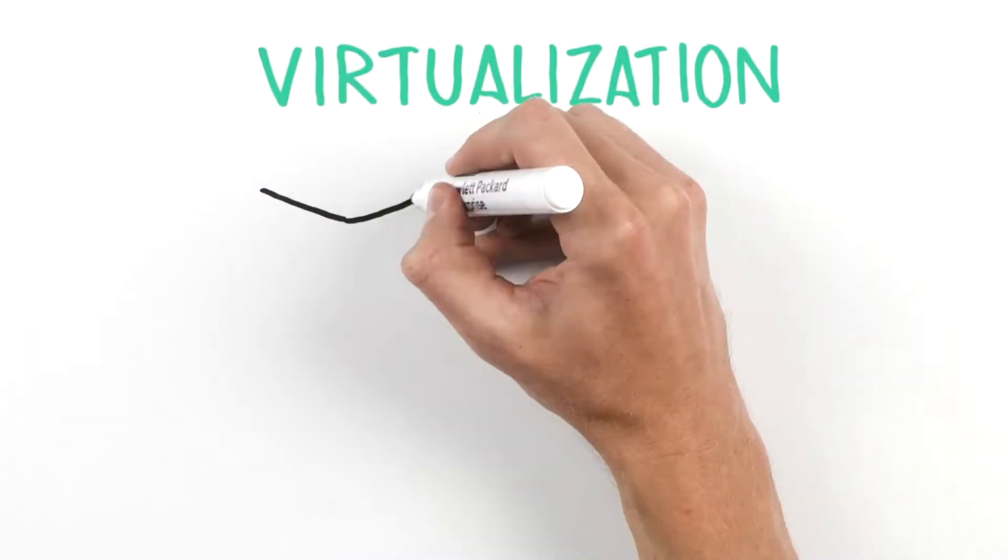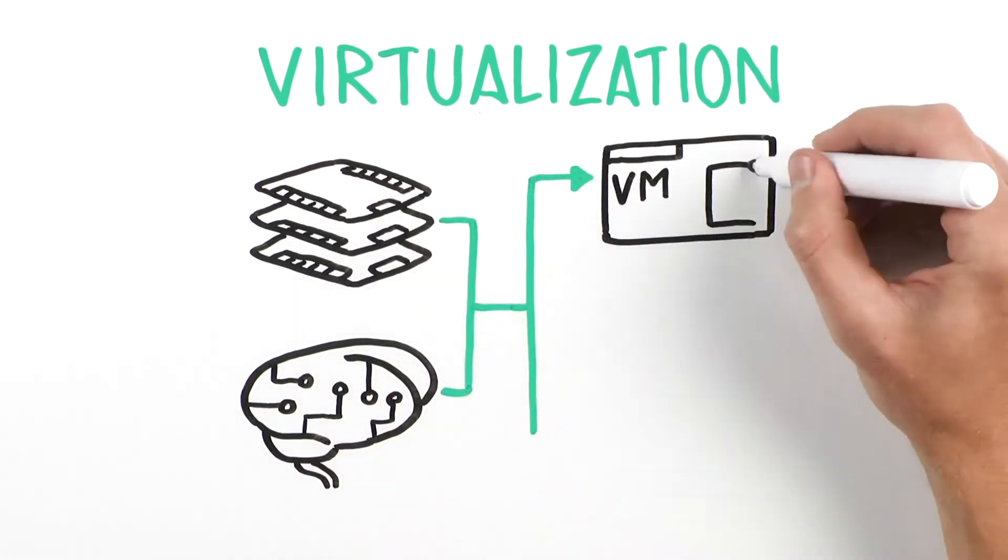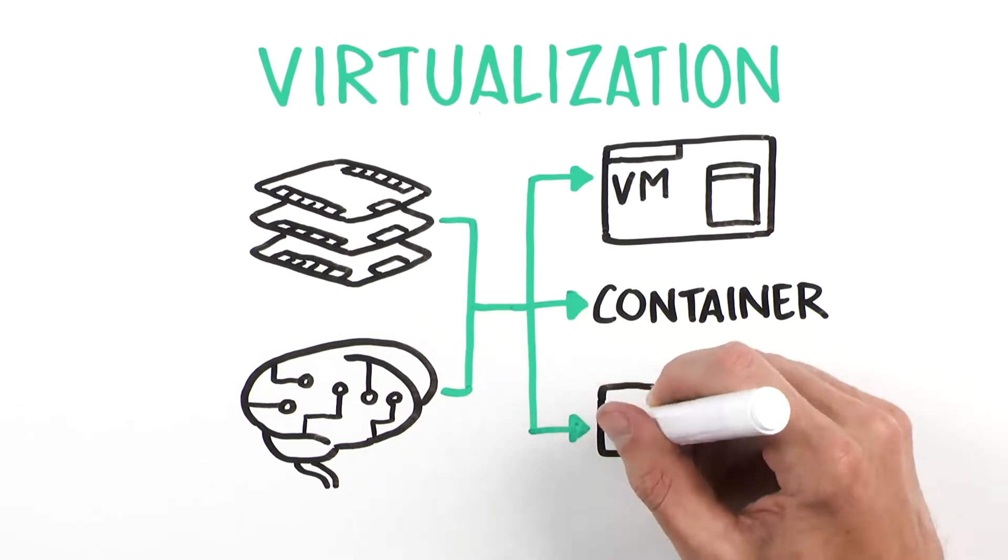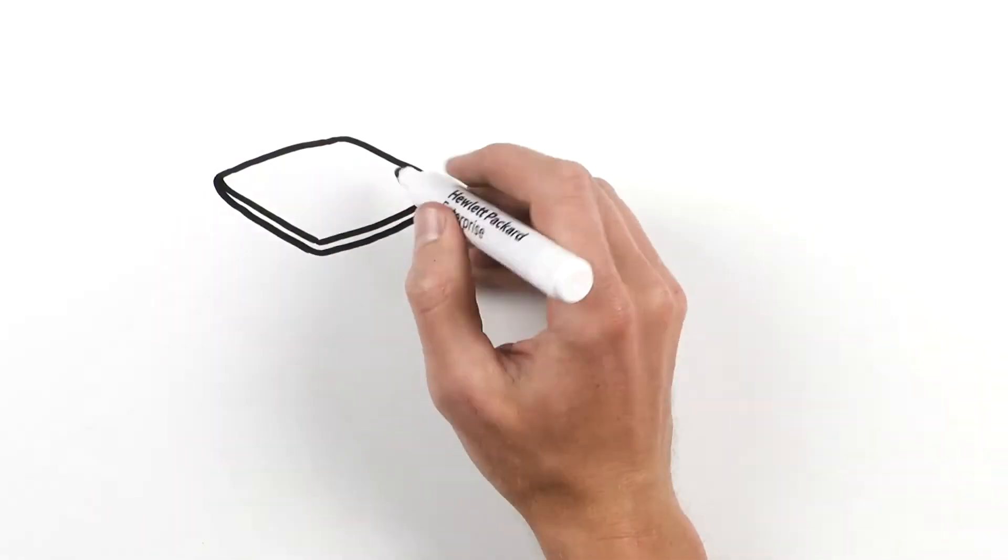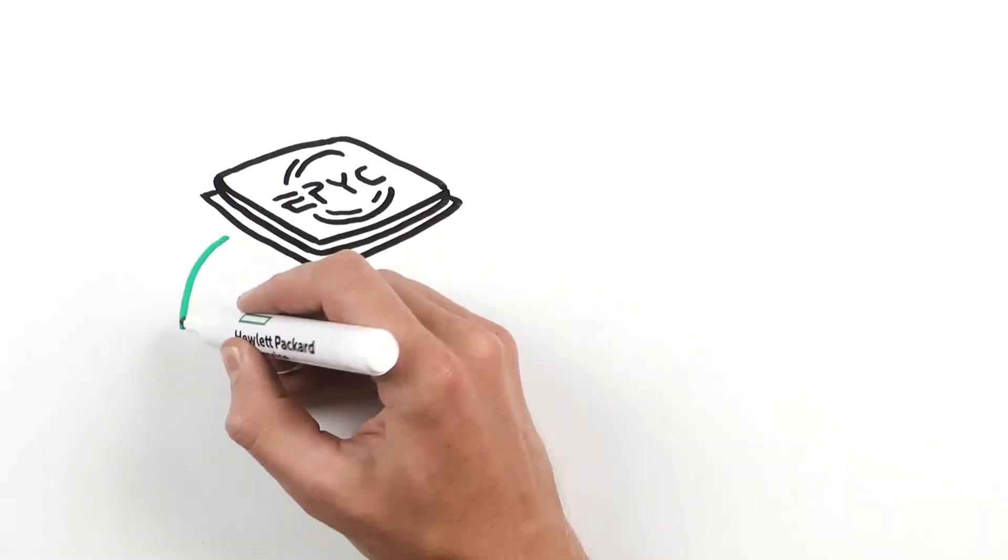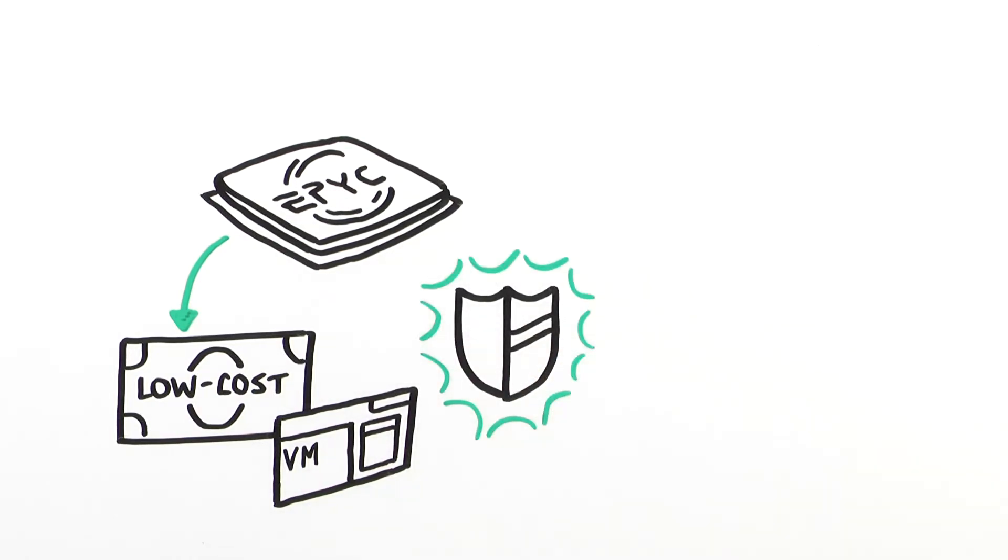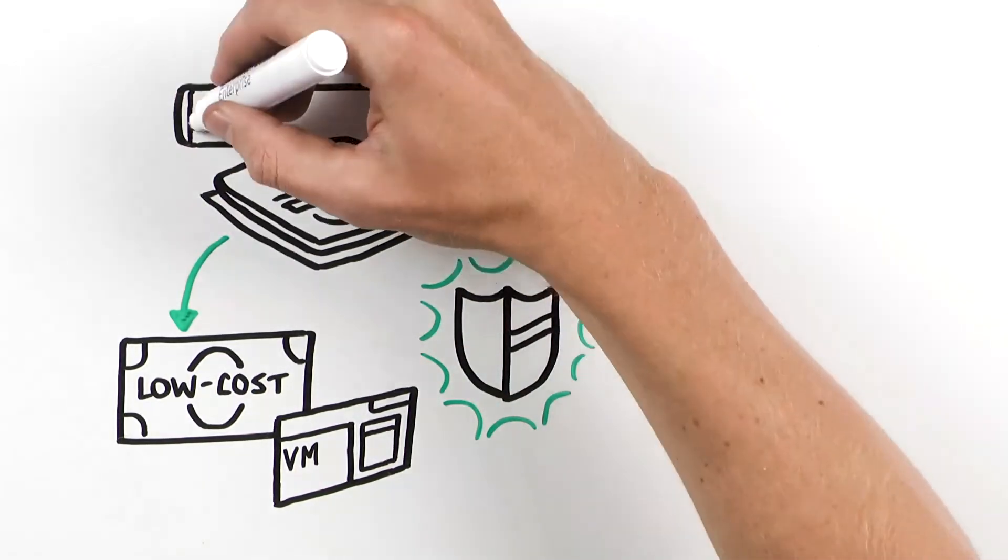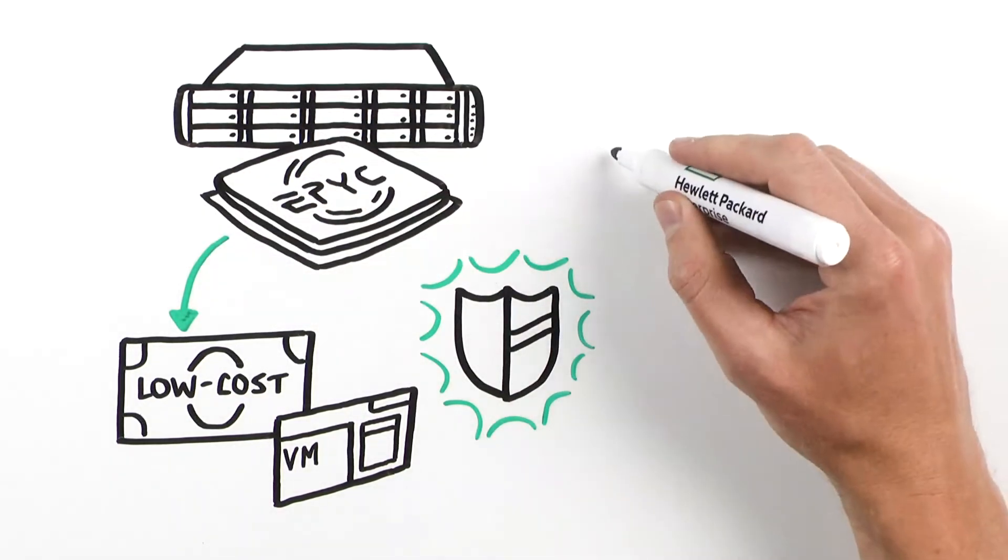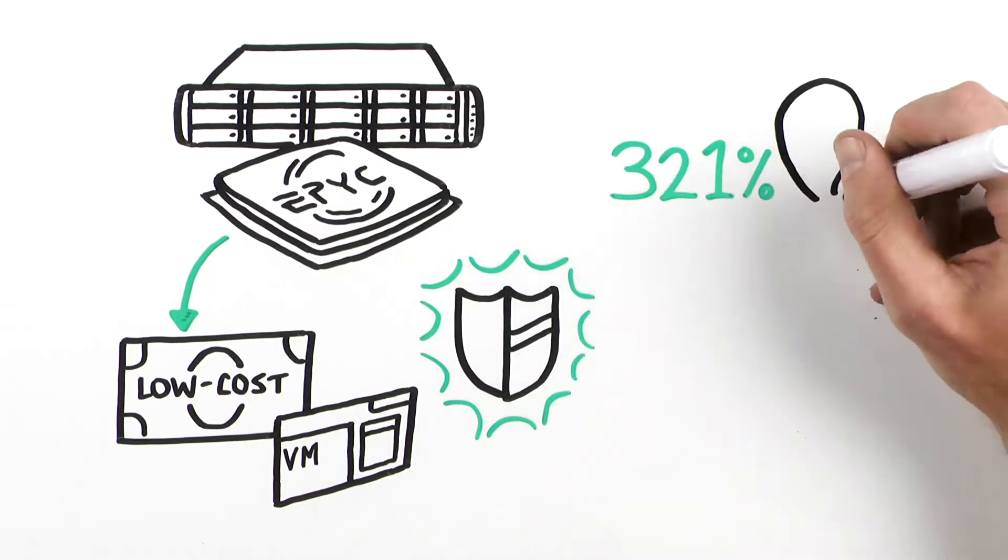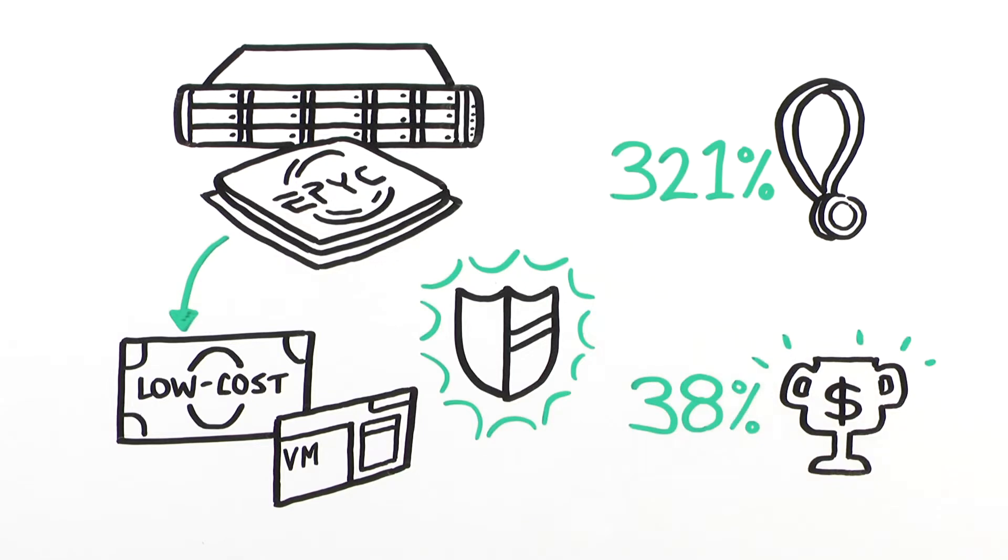Virtualization. Increased core count and memory capacity get you great virtual machine, VM, container, and application density while increasing processor utilization. The AMD EPYC processor's high core count delivers low-cost VMs with that unprecedented security we mentioned before. In fact, the HPE ProLiant DL385 Gen10 with the second-generation AMD EPYC processors delivers 321% better performance and 38% better price performance than the prior leader for virtualization.